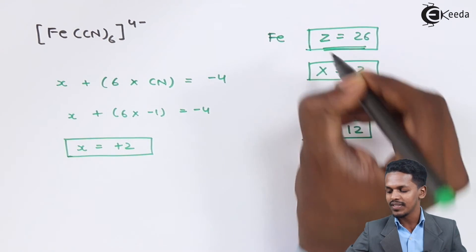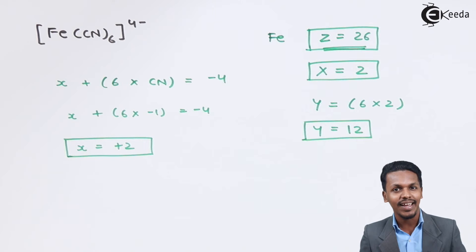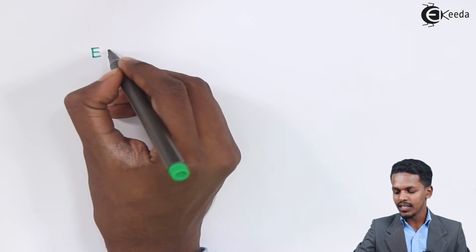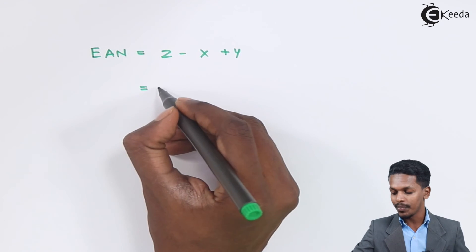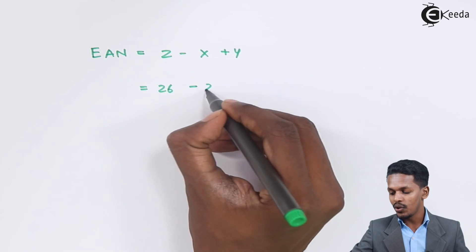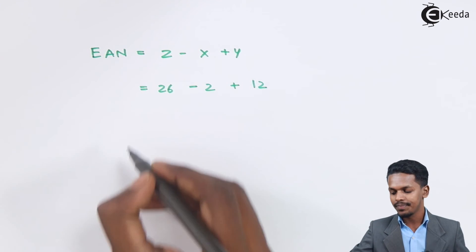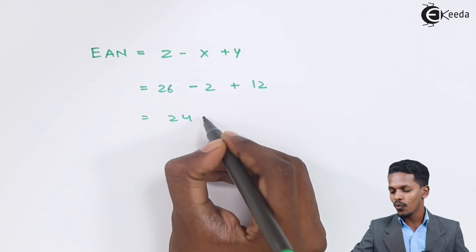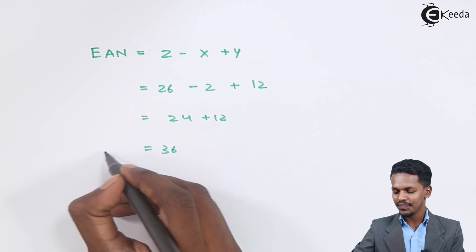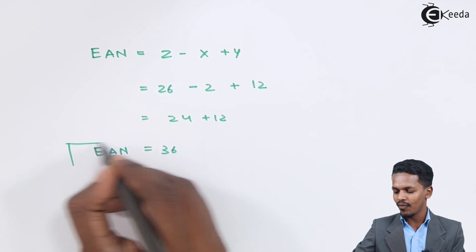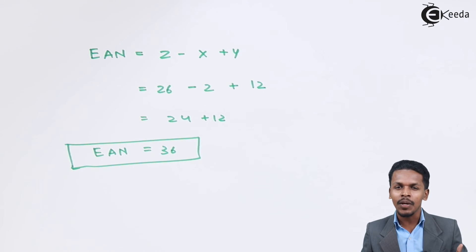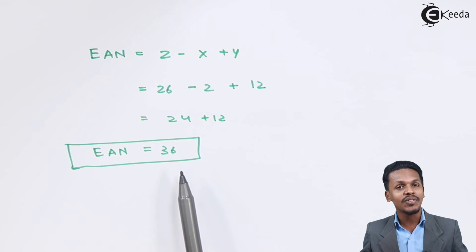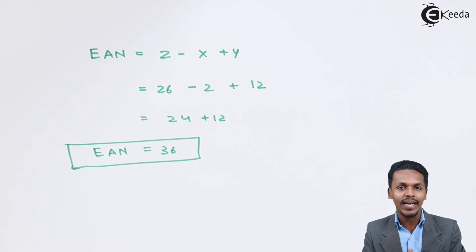Now let us calculate EAN. Using EAN = Z − X + Y: Z = 26, X = 2, Y = 12. So EAN = 26 − 2 + 12 = 24 + 12 = 36. The number 36 is the atomic number of Krypton, which is a noble element. So the EAN rule is also satisfied.